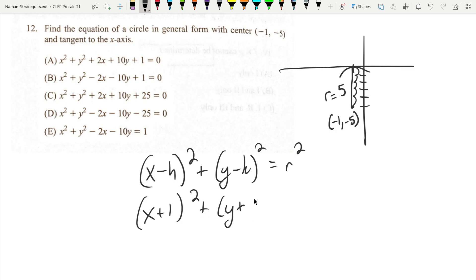k is the y-coordinate of the center, so it's going to be plus five, and r is the radius of that form.